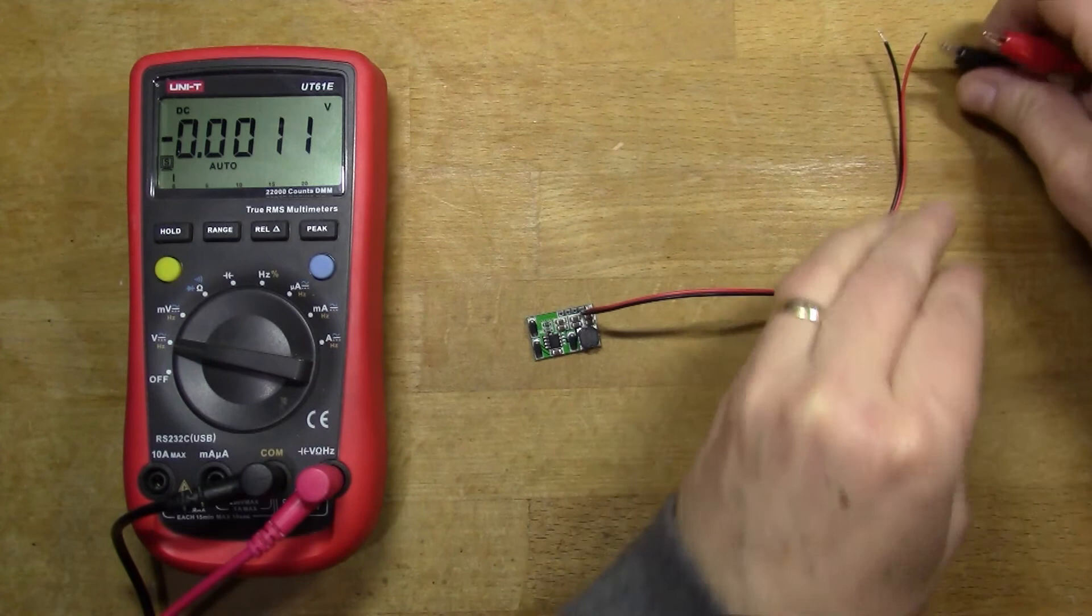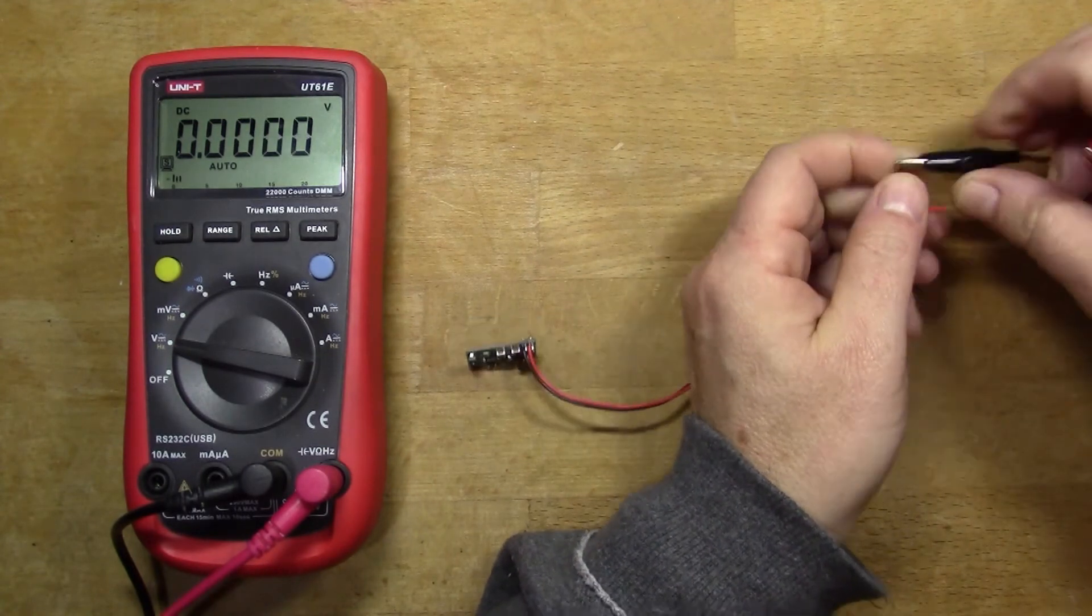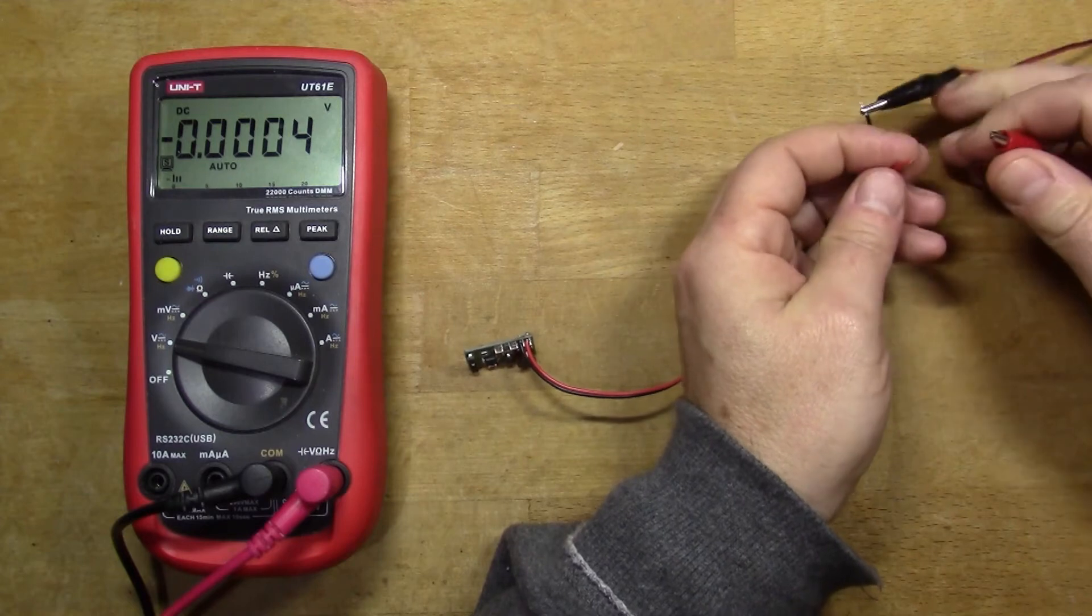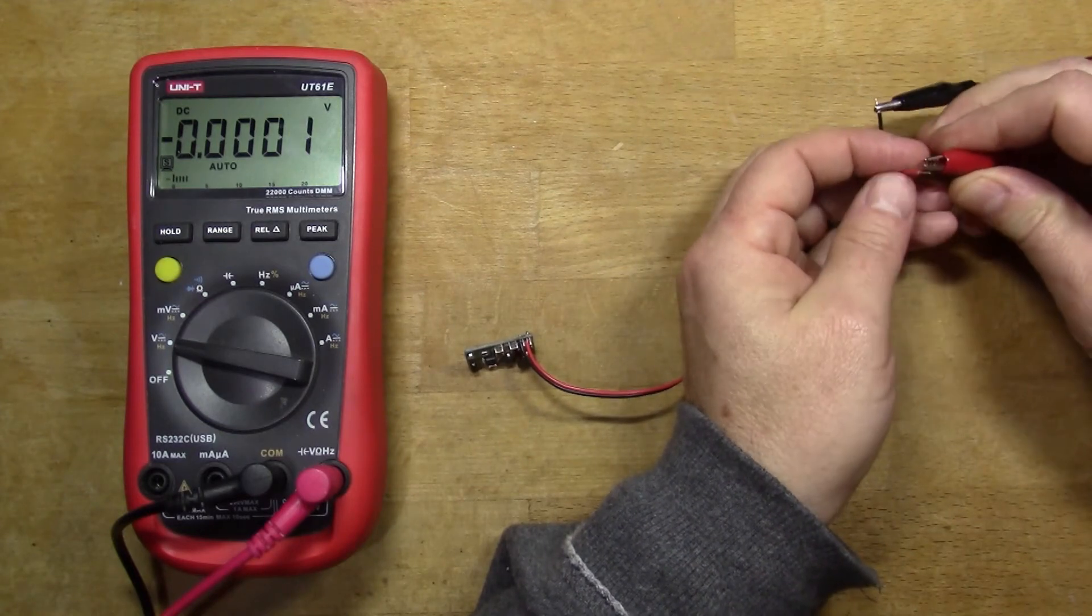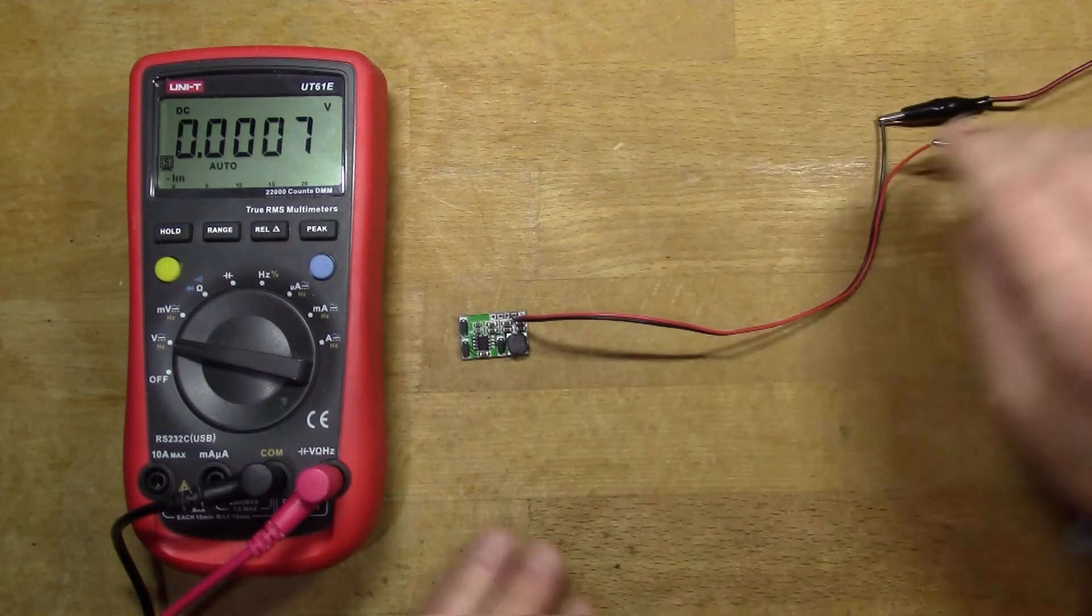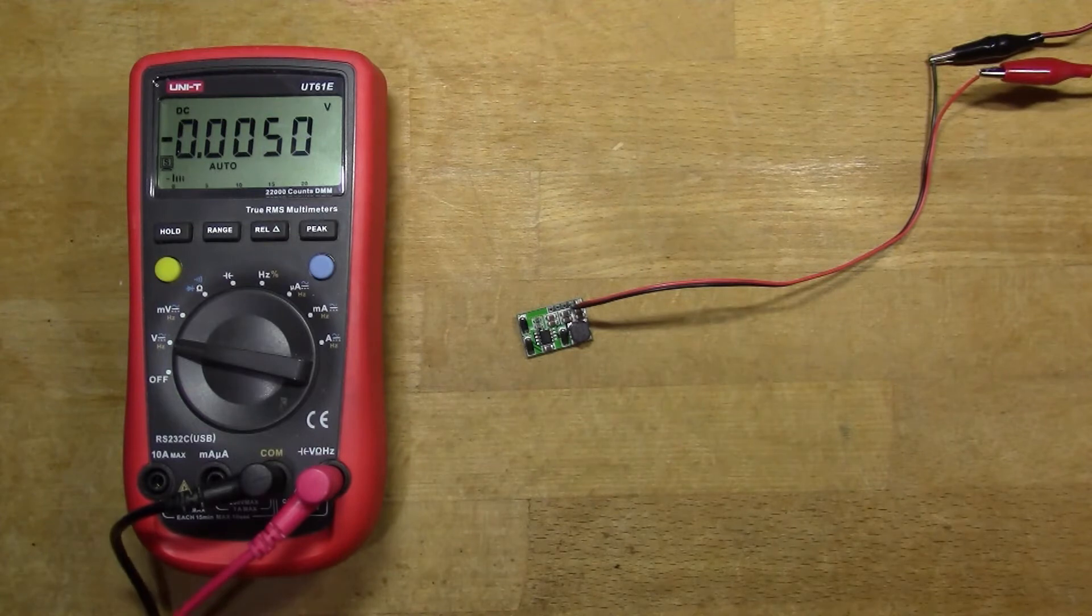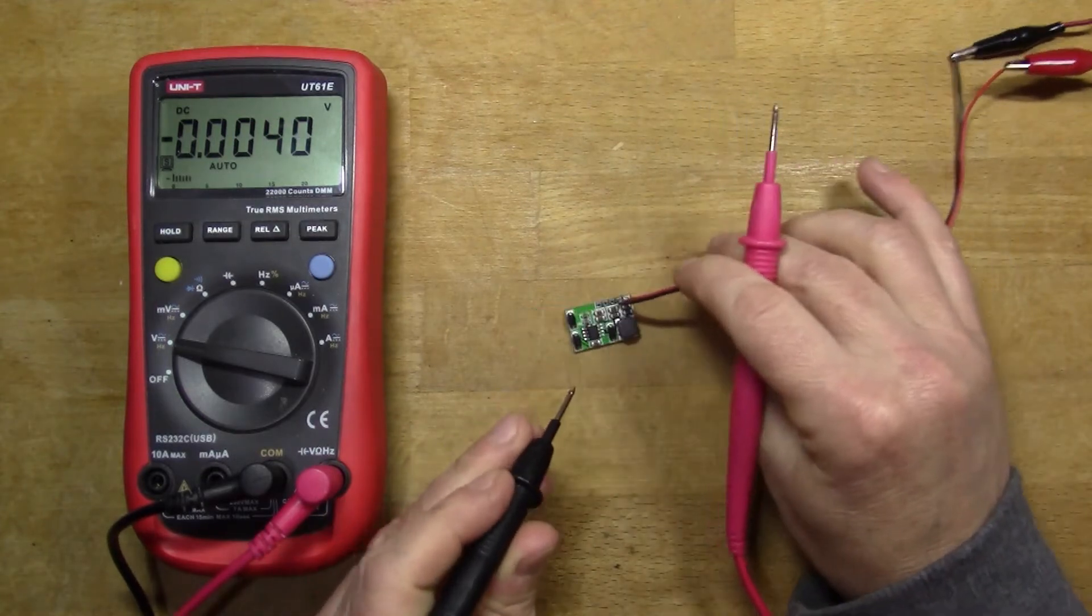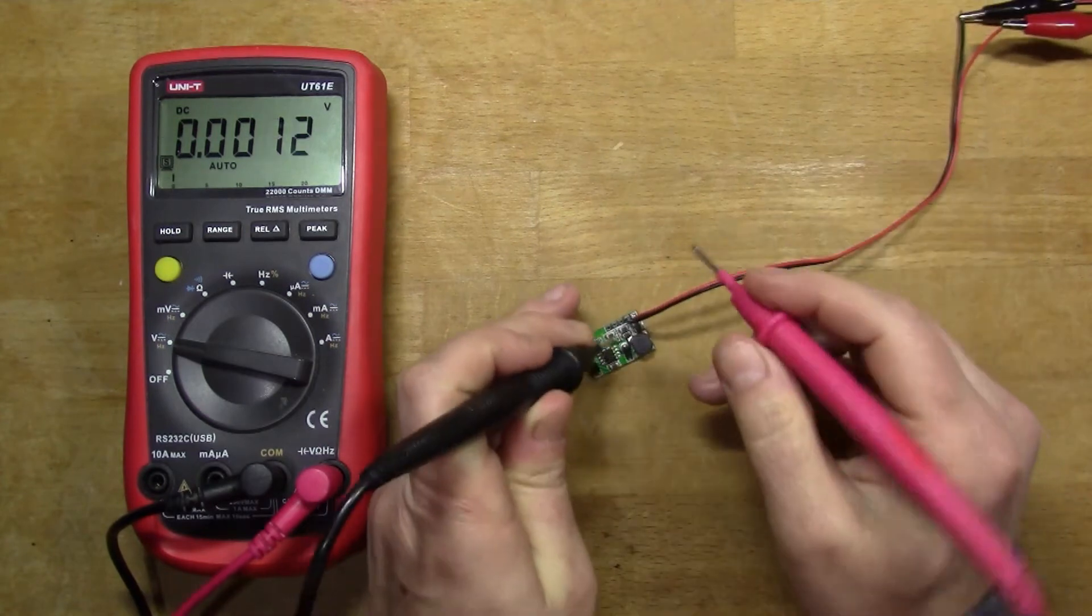First let's connect up five volts and make sure the thing is working. I've got my bench top power supply set to five volts with 100 milliamps available. I'll put the probes on here.